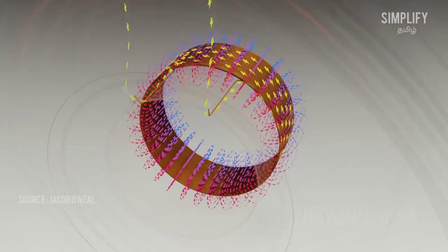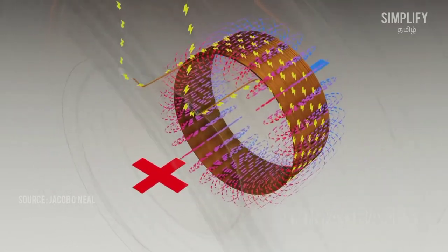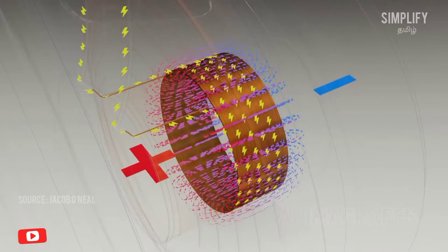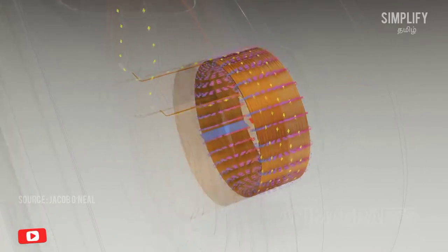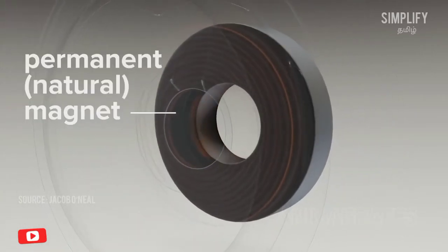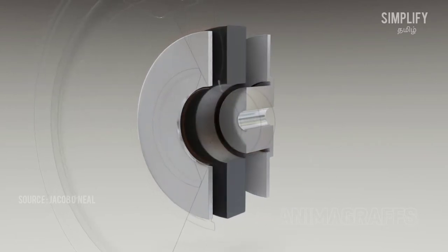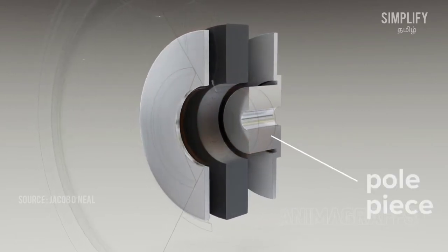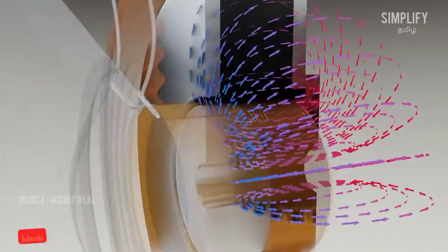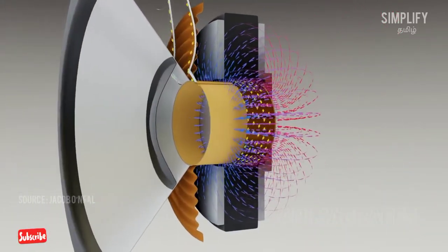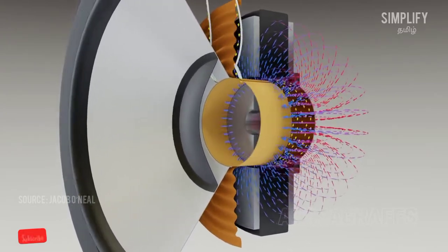This electromagnet creates a magnetic field. The voice coil sits within a permanent natural magnet. This magnet has a top plate.